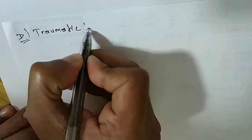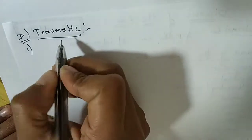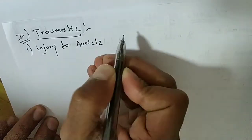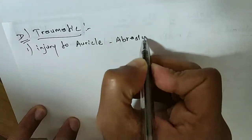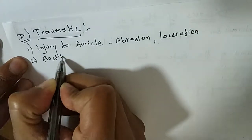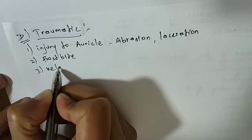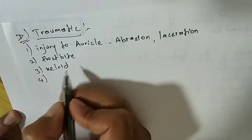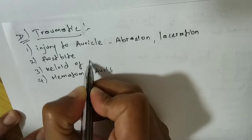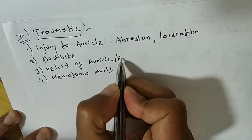The fourth condition is traumatic. Under the traumatic category come the following diseases: injury to the auricle — including abrasion or laceration; frostbite; keloid; and hematoma auris, which is a hematoma of the auricle or pinna (they are the same thing).